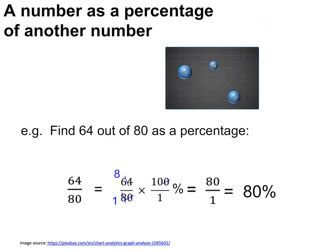To express one number as a percentage of another, make the numbers into a fraction and then multiply that fraction by 100 over 1. Cancel and simplify to get the final answer. The first number becomes the numerator of the fraction, the second number becomes the denominator.